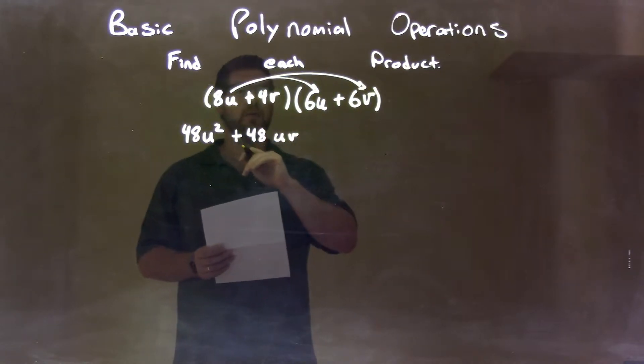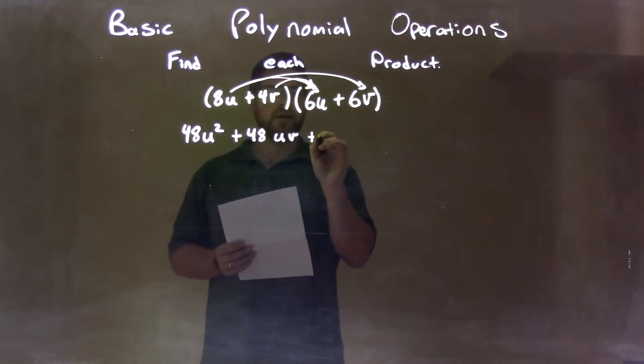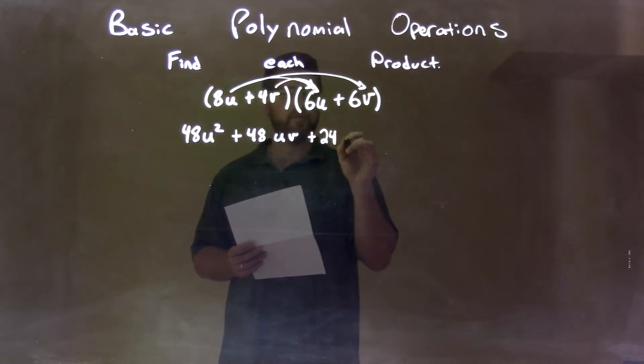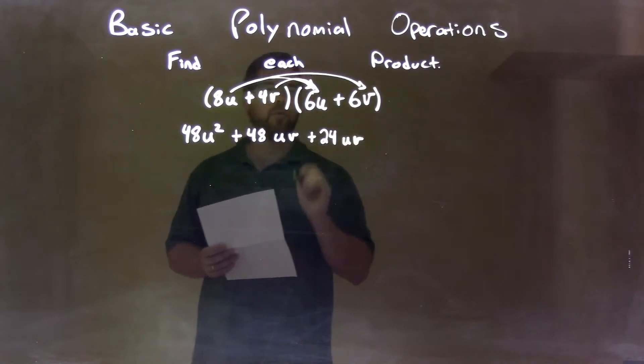Now I finished with the 8u, let's do it with the 4v. 4v times 6u, that's going to be 24uv. I'm going to put u times v, so it's the same order as the one we have written before.